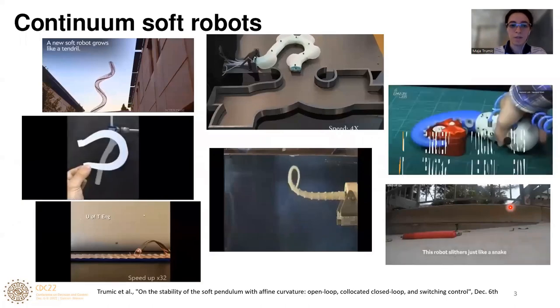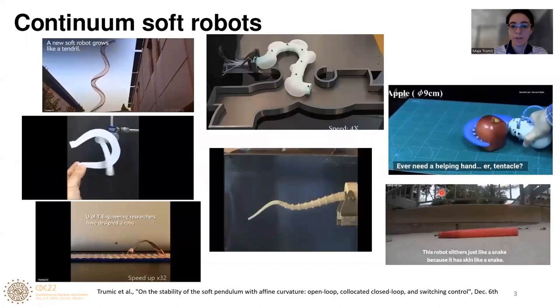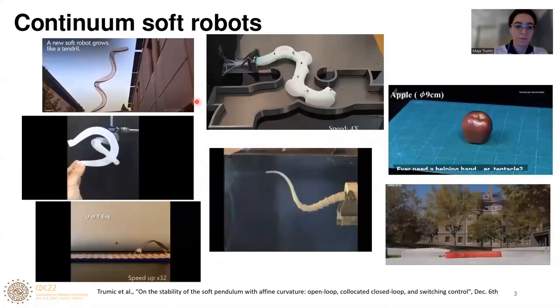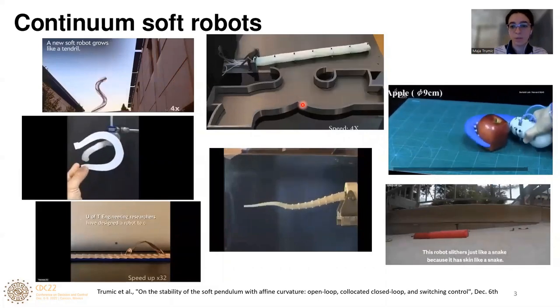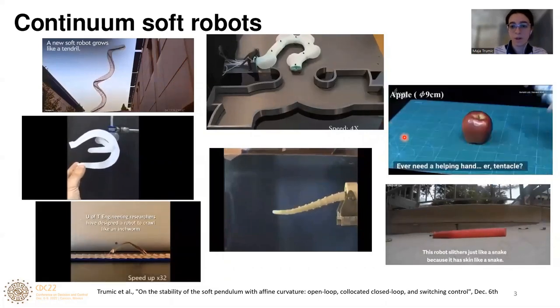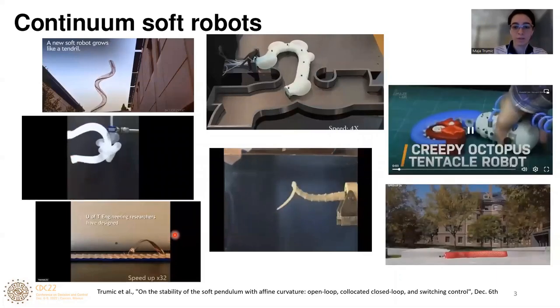The embedded elasticity within soft robots equips them with fantastic manipulation and locomotion capabilities. You can see here some soft robots that can grow like a plant, move in constrained spaces, grasp different objects, swim like an octopus, and move like a snake or like a worm.